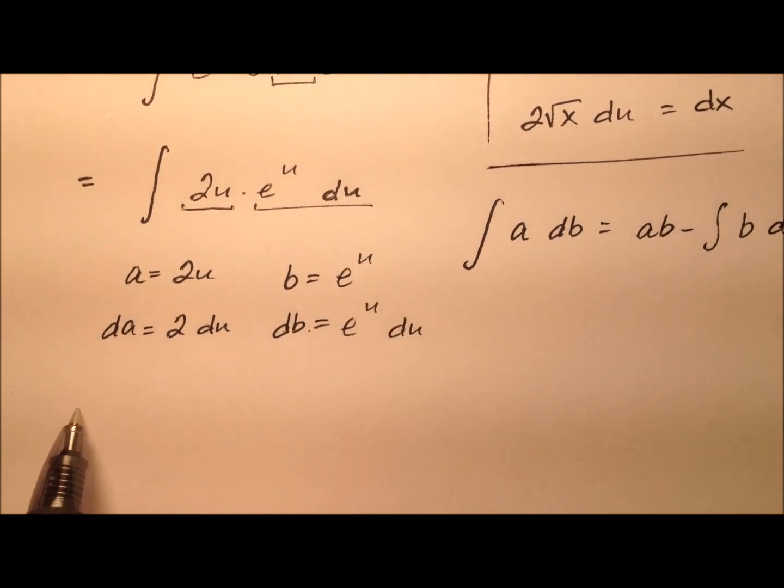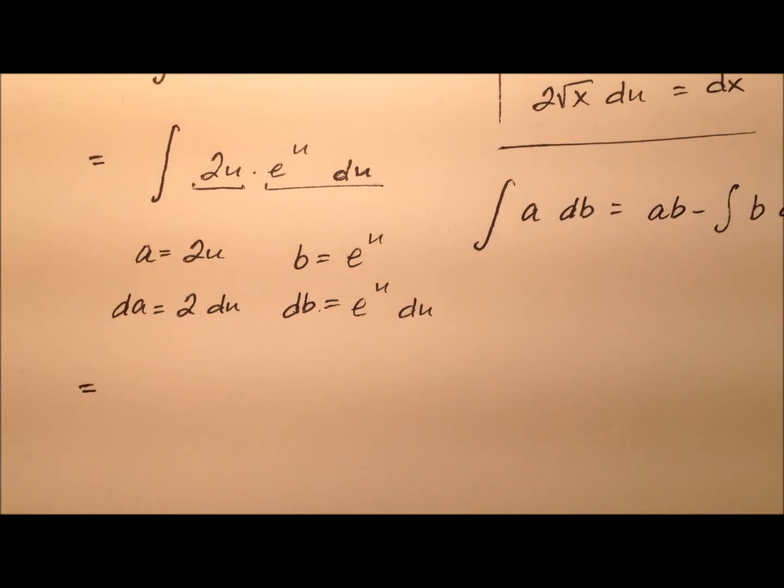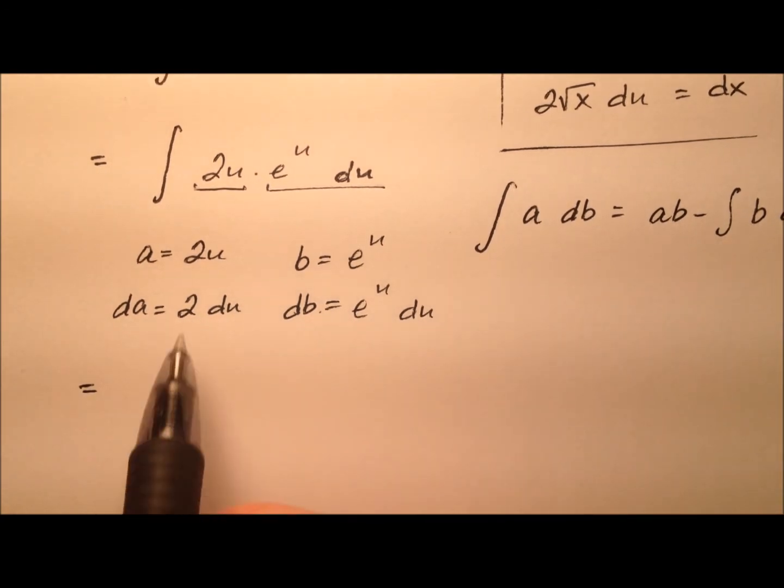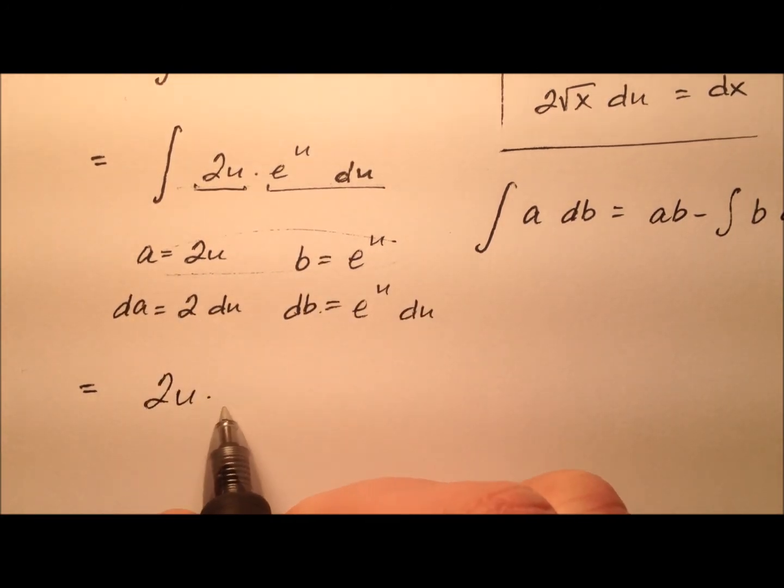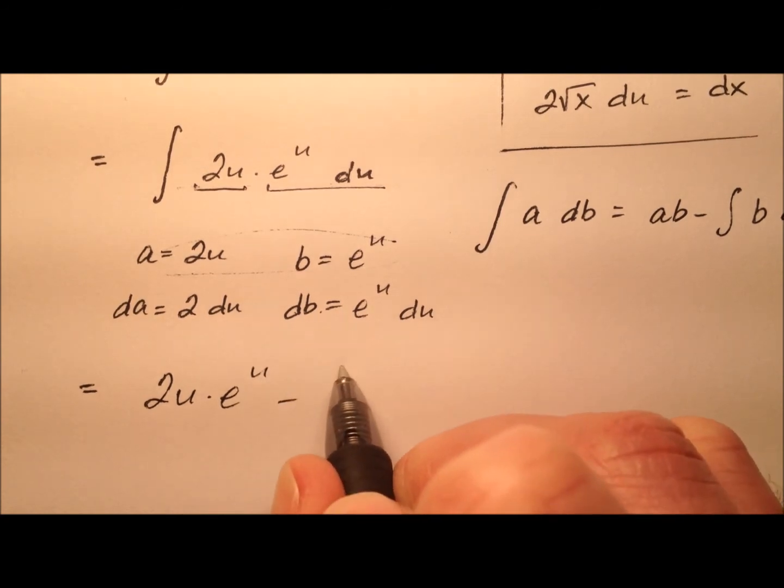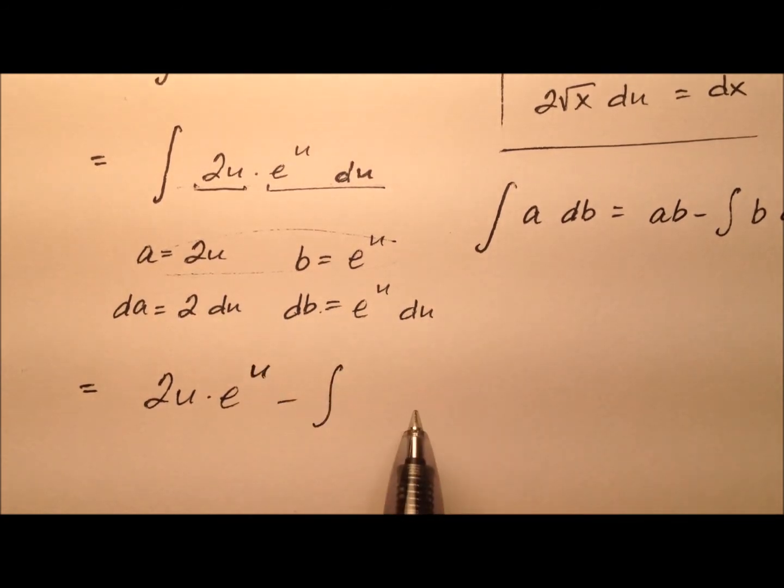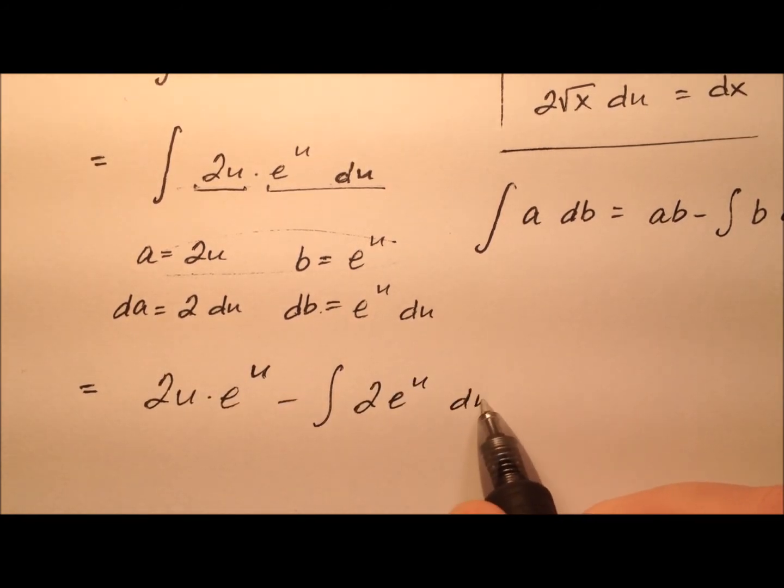Okay, so this kind of is working out pretty nicely. So using this integration by parts, it looks like my integral here is going to be these multiplied together. So 2u times e to the u minus the integral of and then b da. So 2e to the u du.